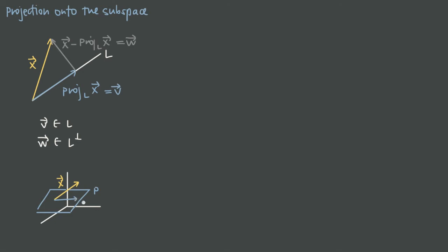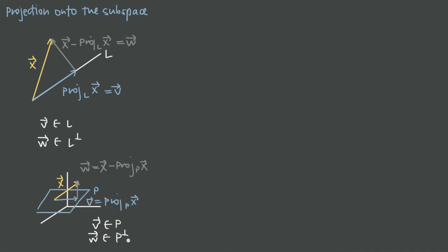The projection is the shadow of x on the plane P. If we call that vector v, we could say v is the projection of the vector x onto P. The orthogonal vector w, which is perpendicular to v, is just equal to x minus the projection of x onto P. In this case, v is part of the subspace P and w is a member of the orthogonal complement P-perp, because w and v are orthogonal to each other.